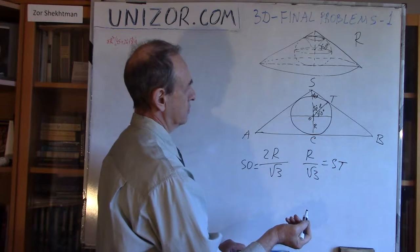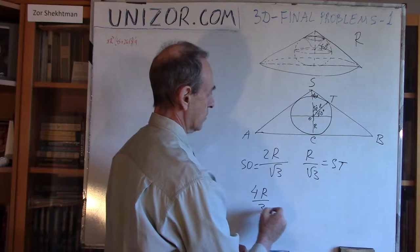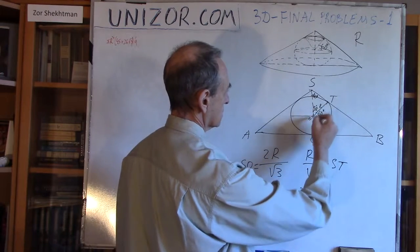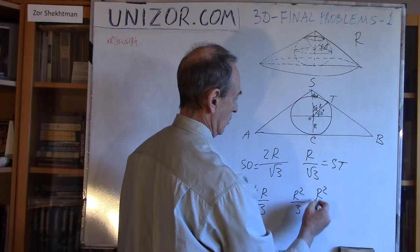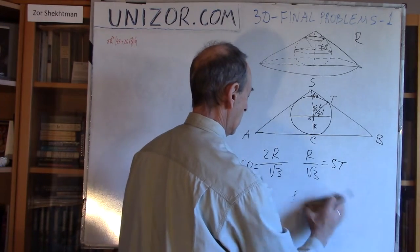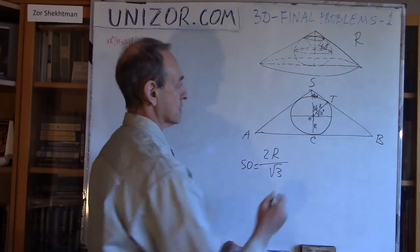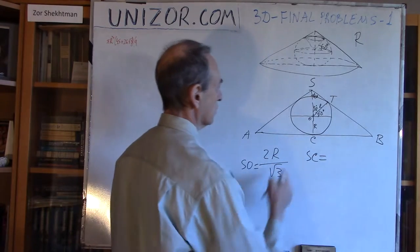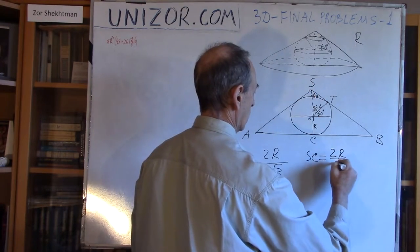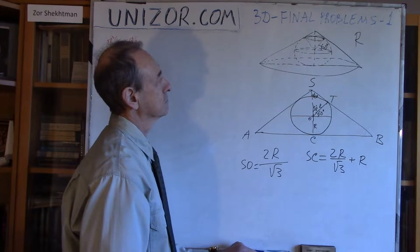Let's check the Pythagorean theorem: hypotenuse squared is 4R²/3, one cathetus squared is R²/3, the other is R² = 3R²/3, and they sum to 4R²/3. Correct. So we found SO = R/√3, and since OC = R, the altitude SC equals SO + OC, which is R/√3 + R, or equivalently 2R/√3 + R after combining. That's the altitude of the cone.